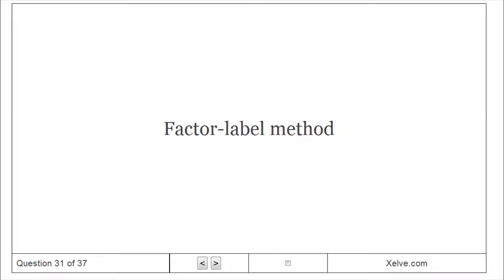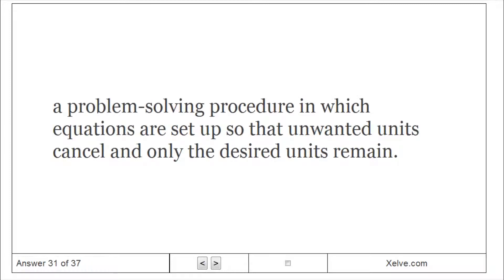Factor Label Method: A problem-solving procedure in which equations are set up so that unwanted units cancel and only the desired units remain.